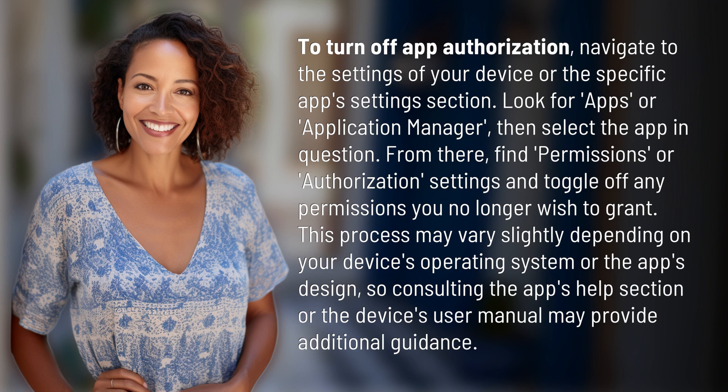From there, find Permissions or Authorization Settings and toggle off any permissions you no longer wish to grant. This process may vary slightly depending on your device's operating system or the app's design, so consulting the app's help section or the device's user manual may provide additional guidance.